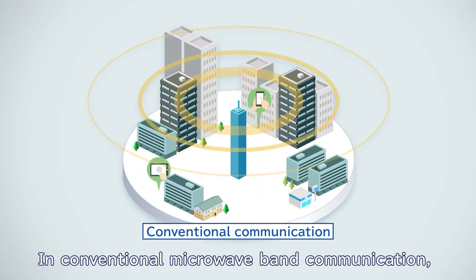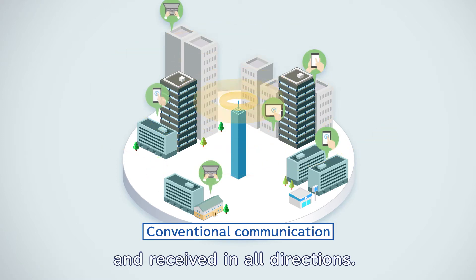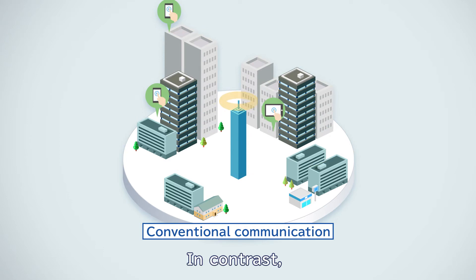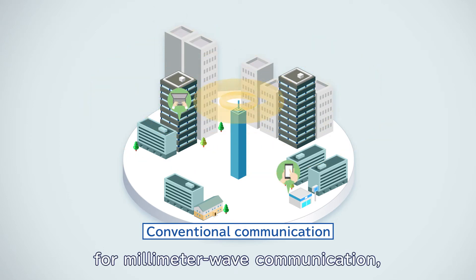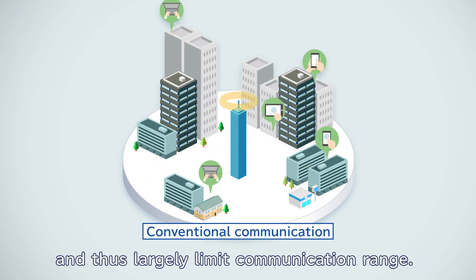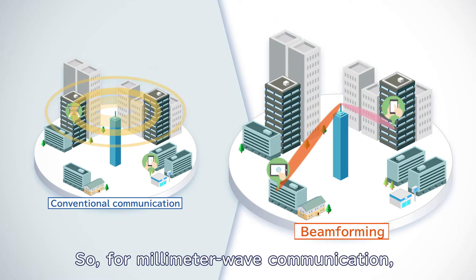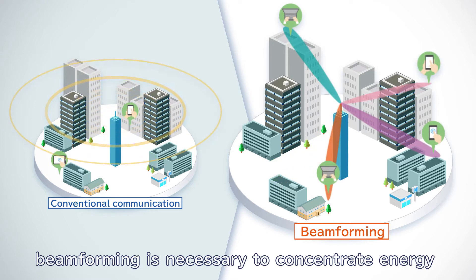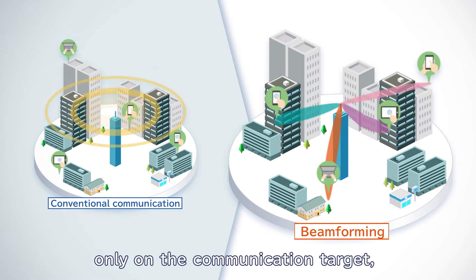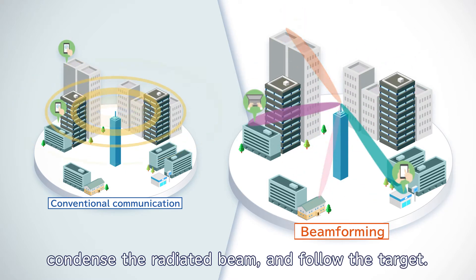In conventional microwave band communication, radio waves are transmitted and received in all directions. In contrast, if the same method is used for millimeter wave communication, the radio wave strength will be reduced to about 1/100, and thus largely limit communication range. So, for millimeter wave communication, beamforming is necessary to concentrate energy only on the communication target, condense the radiated beam, and follow the target.